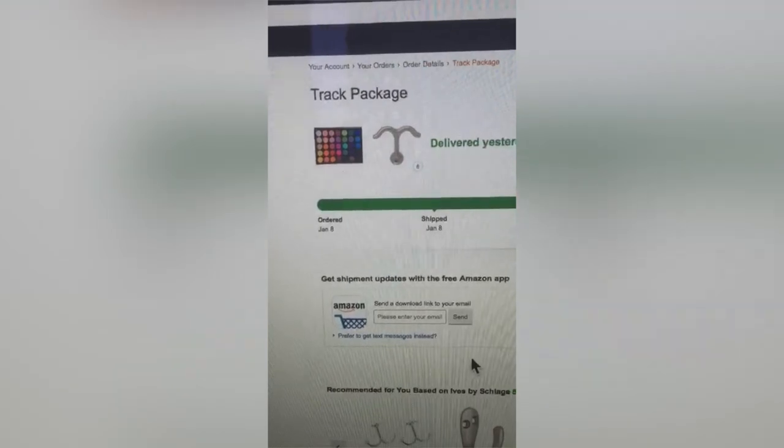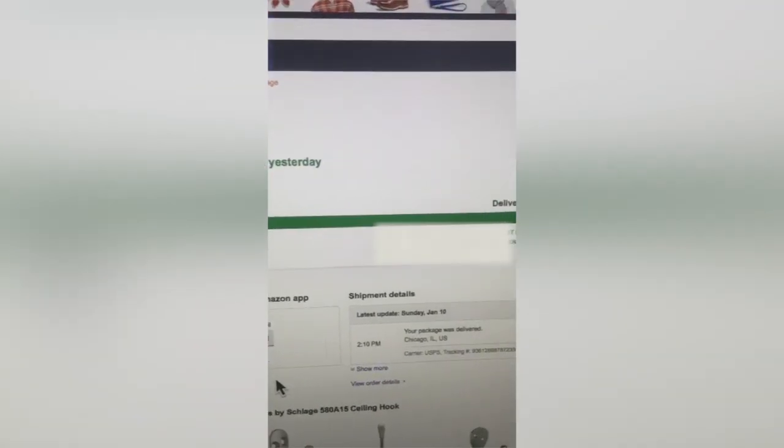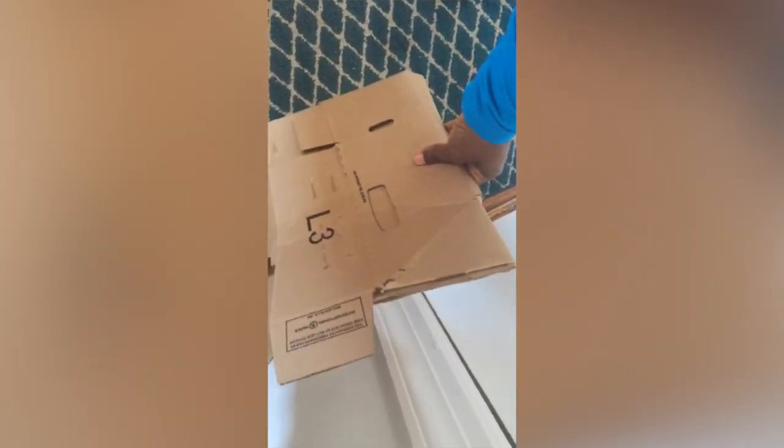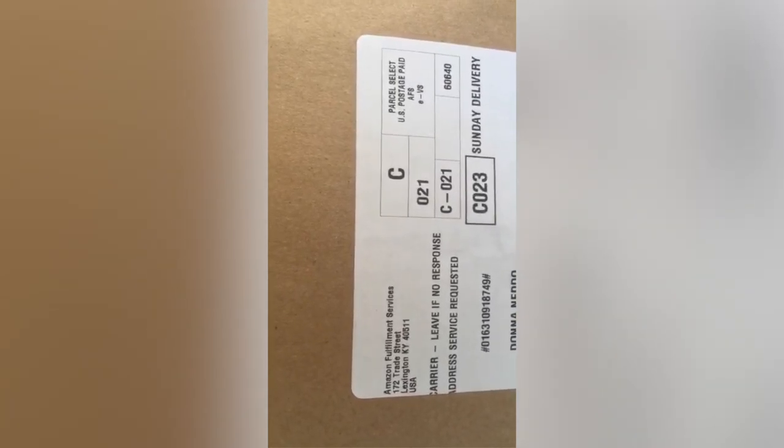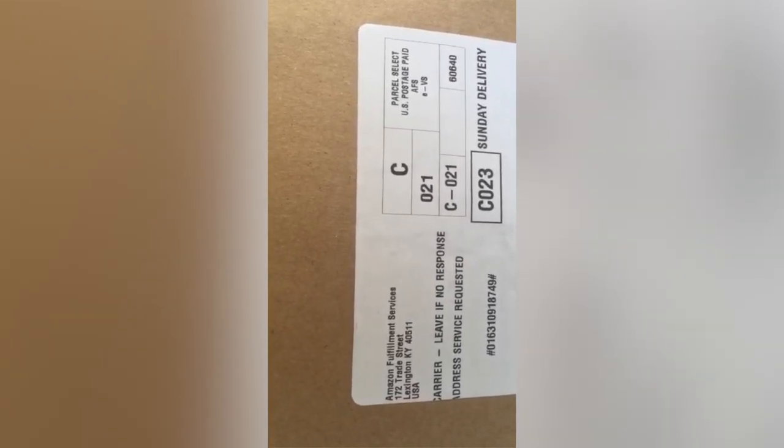I was home all day yesterday and it says that it was delivered at 2:10 PM. When I go downstairs to check for my package, I find this crumpled up box in the trash can next to the mailbox. As I open it up, I realize that this is the package that was supposed to be delivered, but the contents in my package are nowhere to be found.